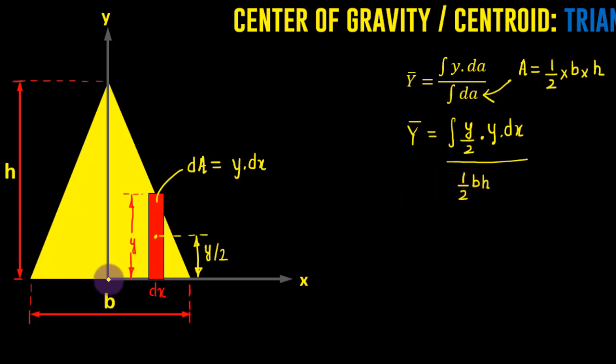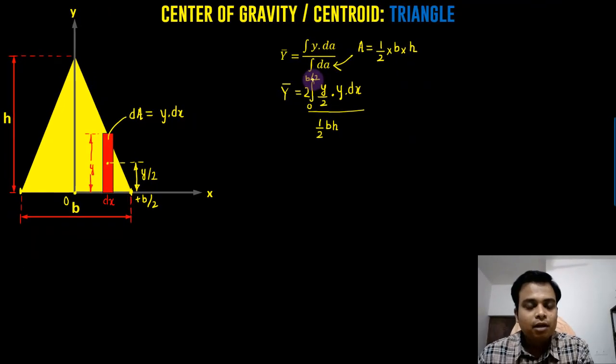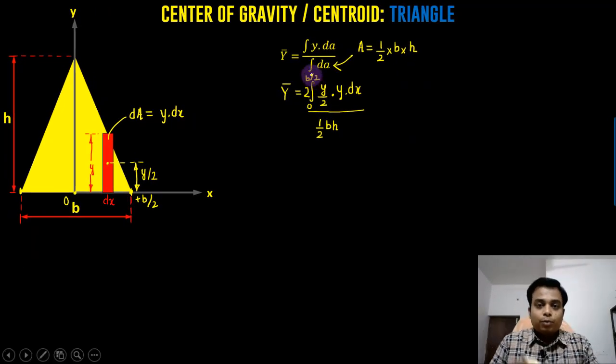This operator is dx. So the value of x is going to vary from negative b by 2 to positive b by 2 over here. You can put in the limits as negative b by 2 to positive b by 2. But it's better to have a 0 in your limit. So what we're going to do is, we're going to take this triangle into consideration and we're going to double that. So essentially we're going to start from this 0 and we're going to go up to positive b by 2. And what I'll do is, I'll put a 2 over here and the limit is going to be from 0 to b by 2. That's going to make my integration a lot more simplified, a lot more easier to work with.